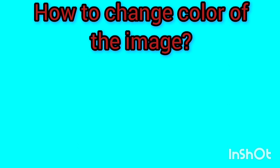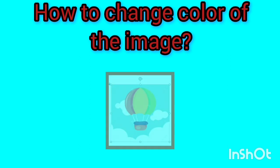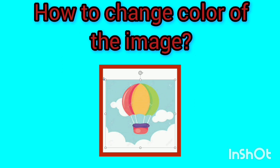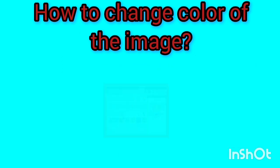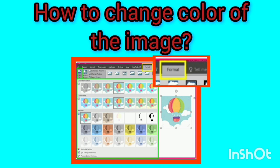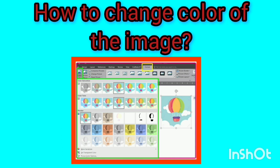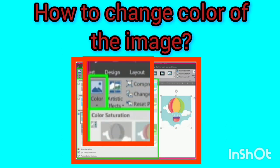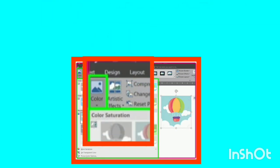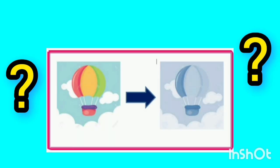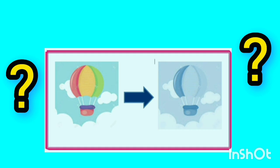We want to change the intensity and color saturation of the image as desired. Click on the image once to select it. Then the Format tab specified with the yellow box will be shown automatically. Click on the Color icon marked with a green box and change the color intensity of the image from the opened list. What color did you make your picture? Don't forget to write me in the comments.